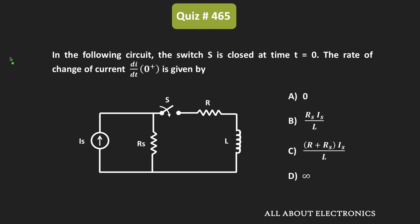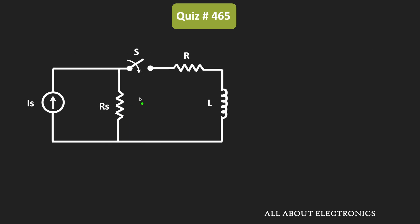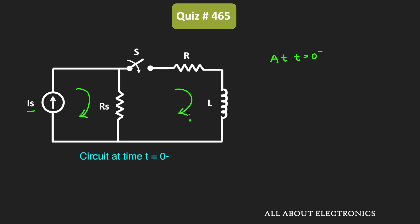So in this circuit, we have been asked to find the rate of change of current at time t is equal to 0+. Before time t is equal to 0+, this switch S is in the open condition. And at that time, this current Is is flowing through the resistor Rs. That means we can say that at time t is equal to 0-, the current through the inductor is equal to 0, or Il(0-) is equal to 0.